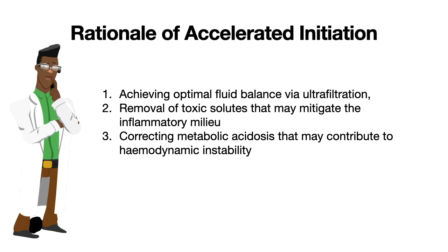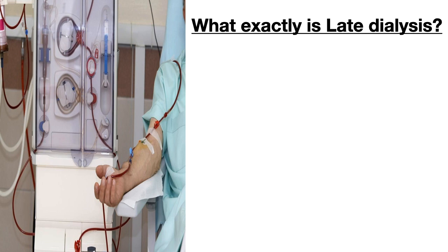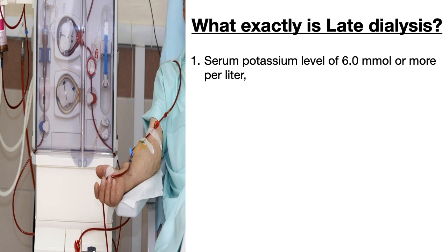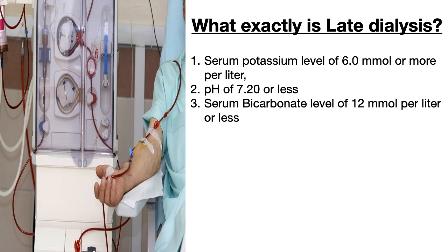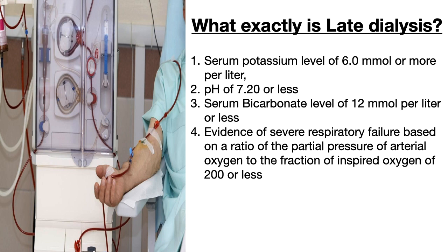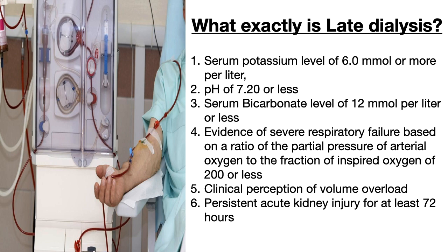What exactly constitutes late initiation of dialysis? This is indicated when serum potassium is more than 6, pH is less than 7.2, serum bicarbonate is less than 12, or there is evidence of severe respiratory failure with a PF ratio less than 200, clinical perception of volume overload, or a persistent acute kidney injury for at least 72 hours. These remain the established indications for dialysis, and if a patient has these, we must proceed with dialysis.